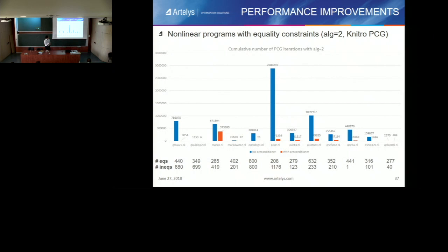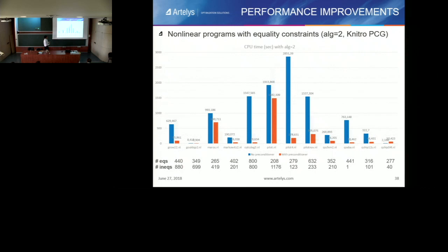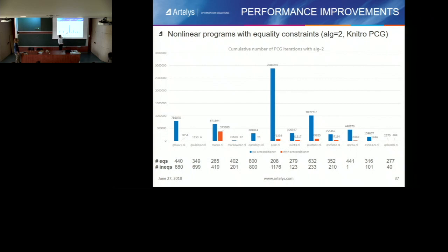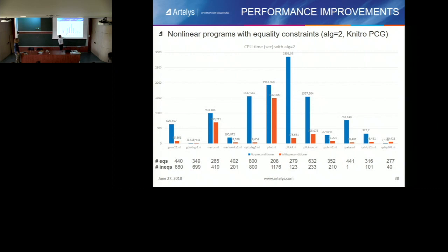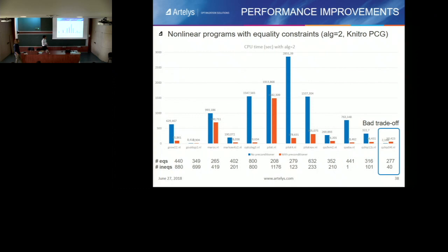In all cases, the preconditioner behaves well and drastically reduces the number of iterations. For CPU time, it also works on most cases — for example, OPT-C-DEC3 shows CG iterations reduced by more than a factor of 100, with a corresponding CPU improvement. But in some problems the preconditioning operations cost more than the numerical benefit gained, so you don't get as large an improvement, and in some cases it's even worse in CPU time while still better in number of iterations. We are currently working on tricks to improve the efficiency of this feature.